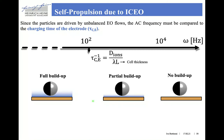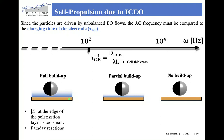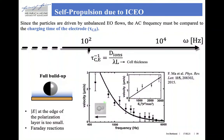If the operating frequency is too low, we run into other problems: the magnitude of the electric field at the edge of the polarization layer is too small, and we also have Faraday reactions across the electrode. In practice, experiments of induced charge electroosmosis propulsion are done in a frequency range where we have a partial build-up of the electrical double layer of the conductive substrate, so the slip velocity decreases as we increase the operating frequency, as shown in this plot.